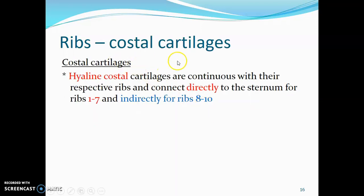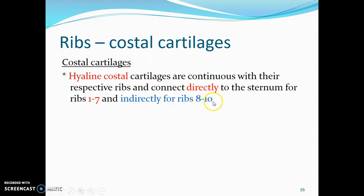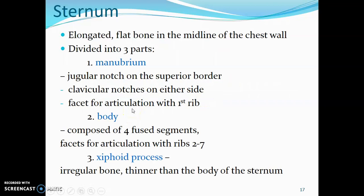The costal cartilages connect the typical ribs to the sternum and are made up of hyaline cartilage. They are continuous with their respective ribs. The first to seventh ribs connect directly to the sternum. However, ribs eight to ten connect indirectly — their costal cartilages fuse together before inserting onto the sternum.